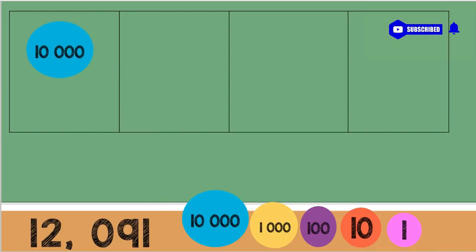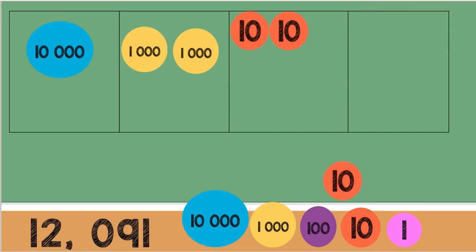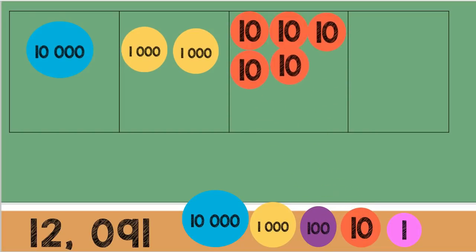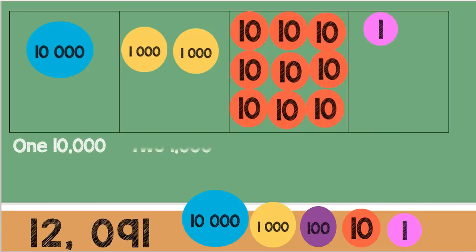First, let's put 10,000. Next, 1,000 and another 1,000. Next, we have 1, 2, 3, 4, 5, 6, 7, 8, and 9 tens. Last, we have 1 one. So, we have 1 ten-thousand, 2 thousands, 9 tens, and 1 one.